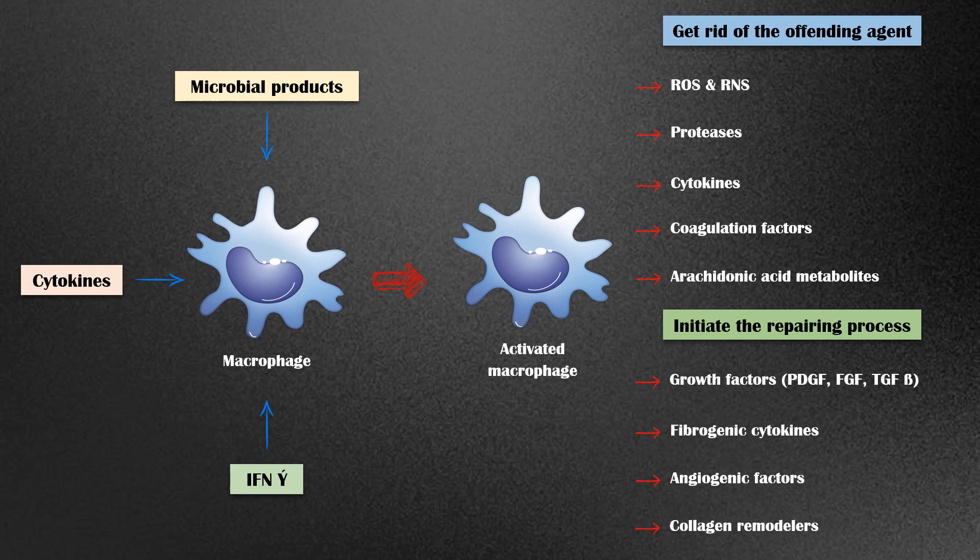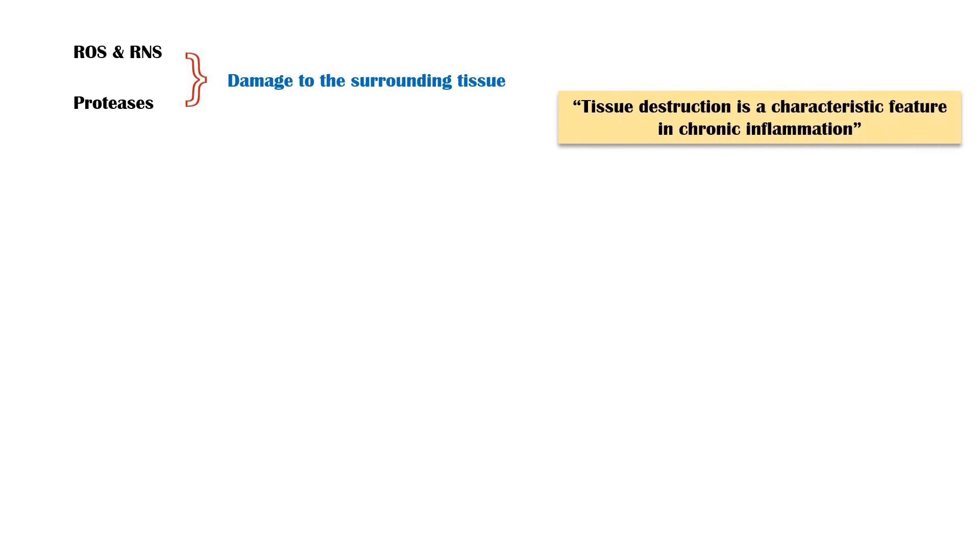Even though the purpose of macrophages is to eliminate the injurious agent, they can cause damage to the surrounding tissue as well. This is due to the activation of reactive oxygen and nitrogen species and proteases. Therefore, tissue destruction is a characteristic feature in chronic inflammation.